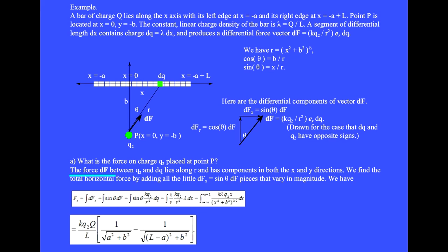The little piece of charge dq is located at x. In this triangle, r equals the square root of x squared plus B squared, cosine theta equals B over R, and sine theta equals x over R. The differential components of vector df are: df sub x equals sine theta times df, and df sub y equals cosine theta times df. We find the total horizontal force by adding all the df sub x pieces, where df sub x equals sine theta times KQ2 over R squared dq, dq equals lambda dx, and sine theta is x over R. The R cubed in the denominator gives x squared plus B squared to the three-halves power. This is a u-du integration when lambda is constant.